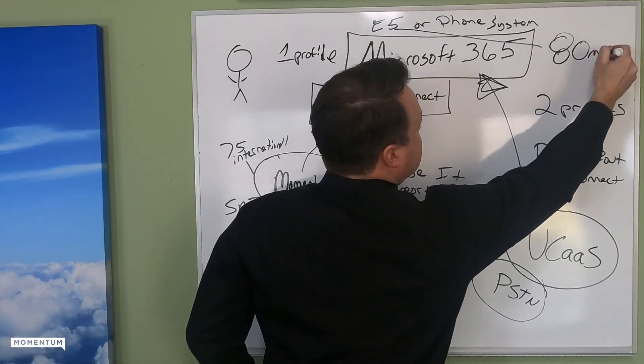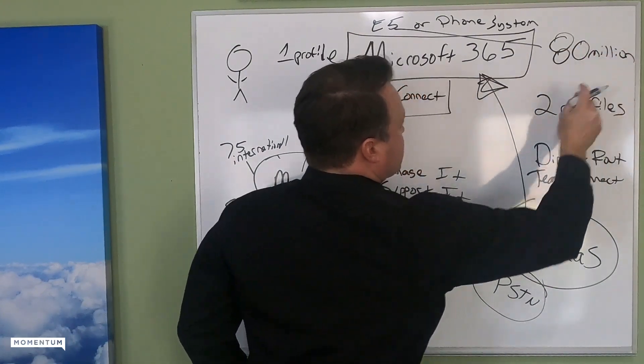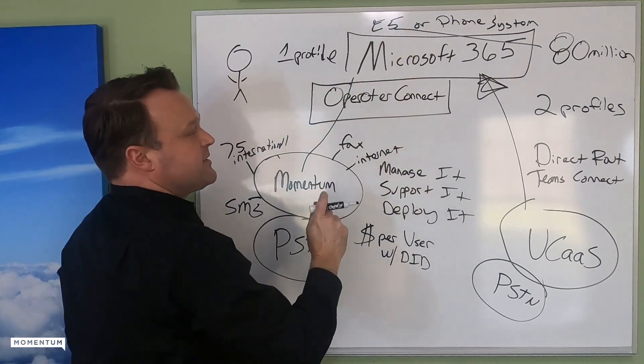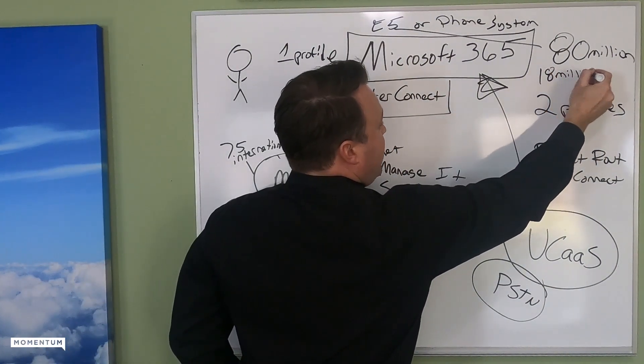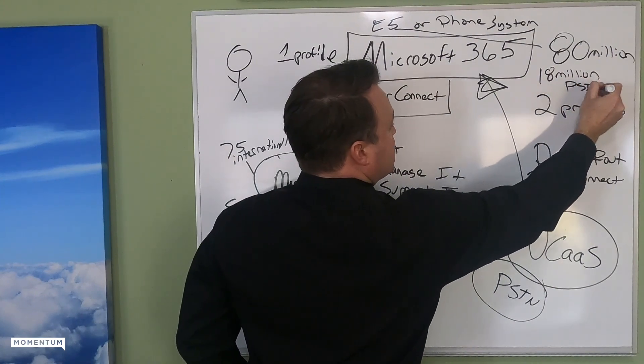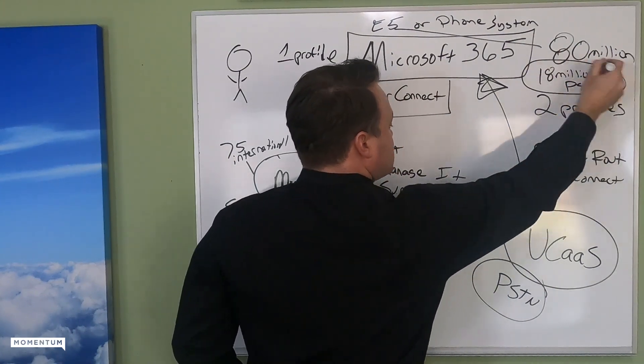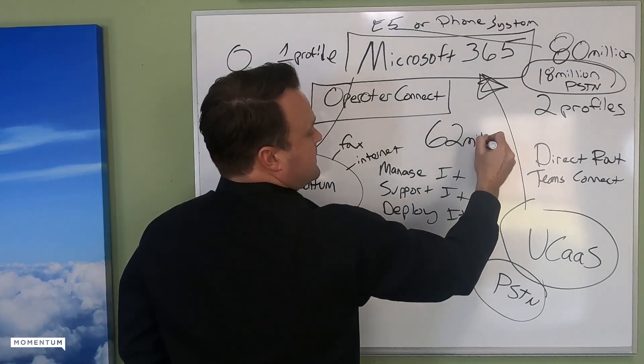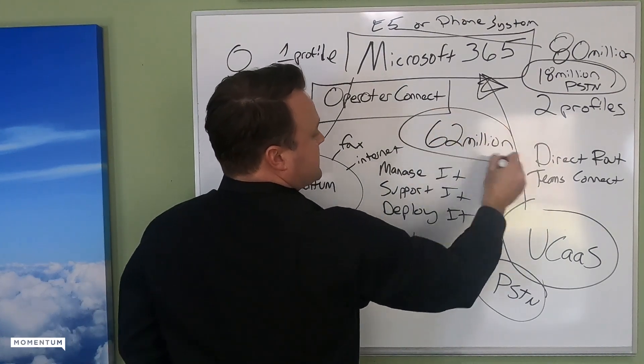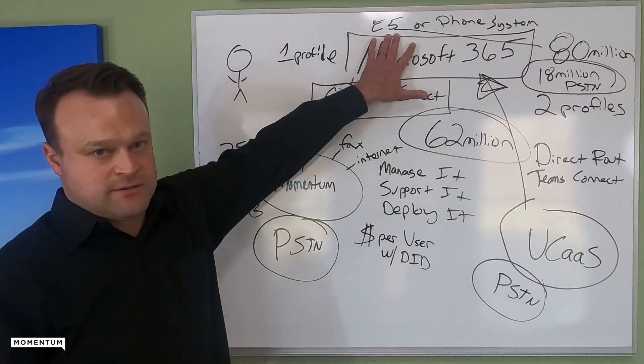there are 80 million of these things out there. 80 million E5 licenses. Only 18 million have the PSTN connectivity. So what that means is there is a 62 million delta, meaning there are 62 million users out there that are already paying for this.